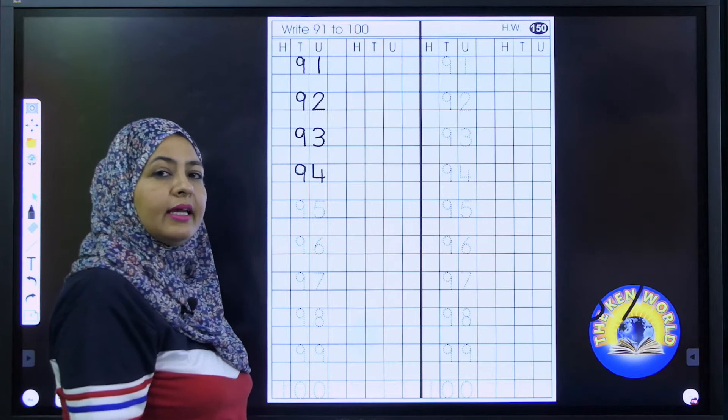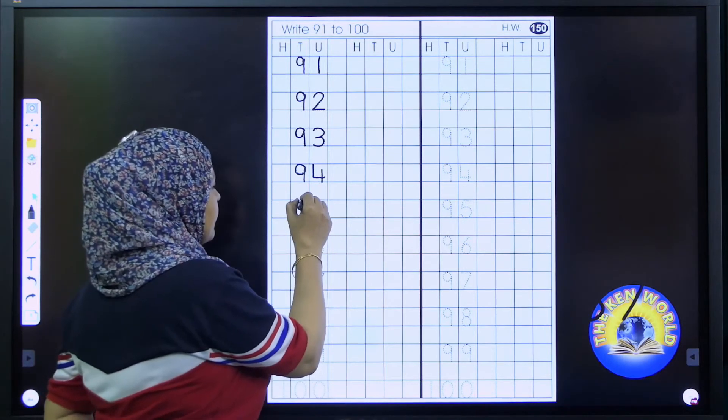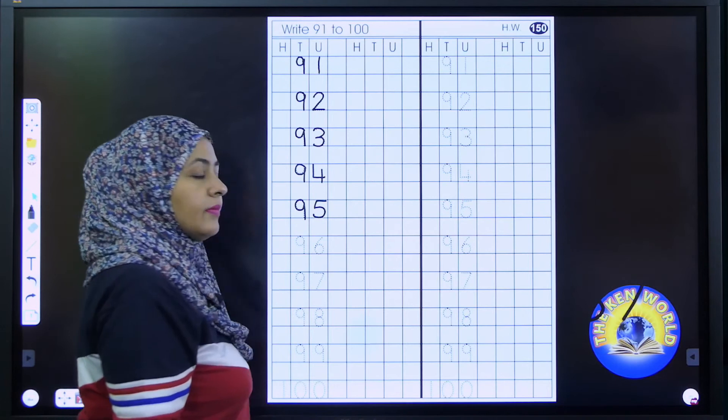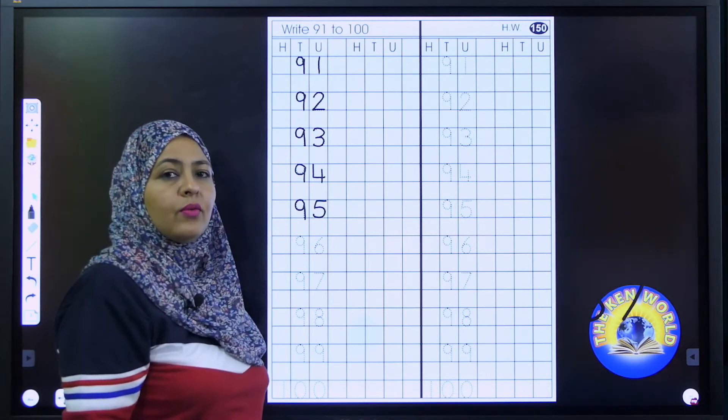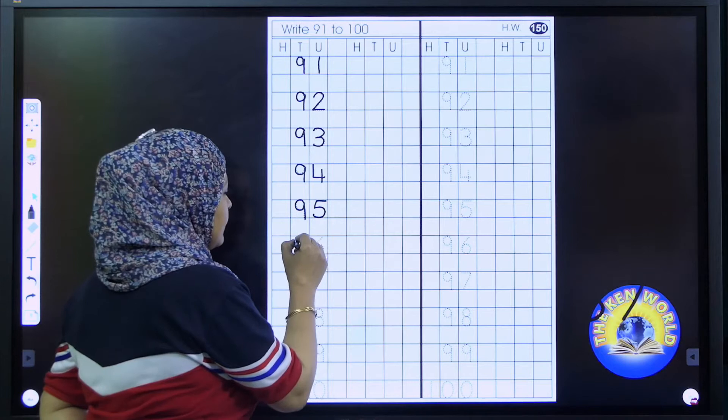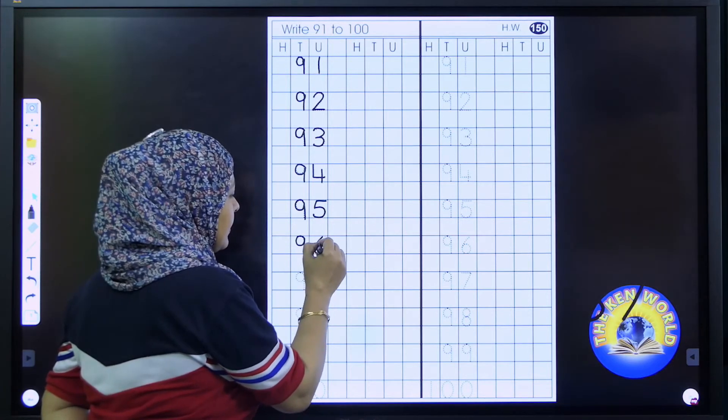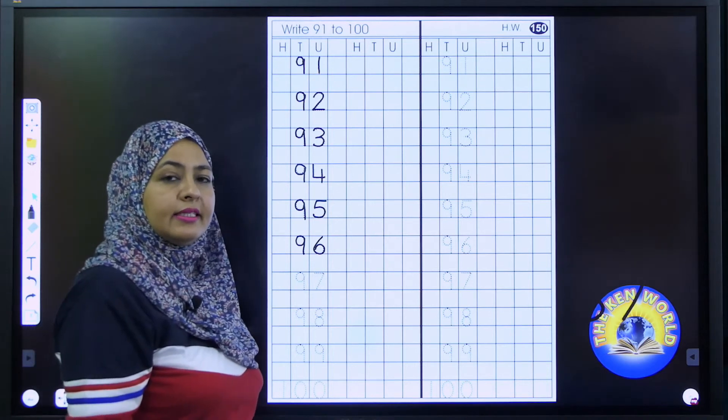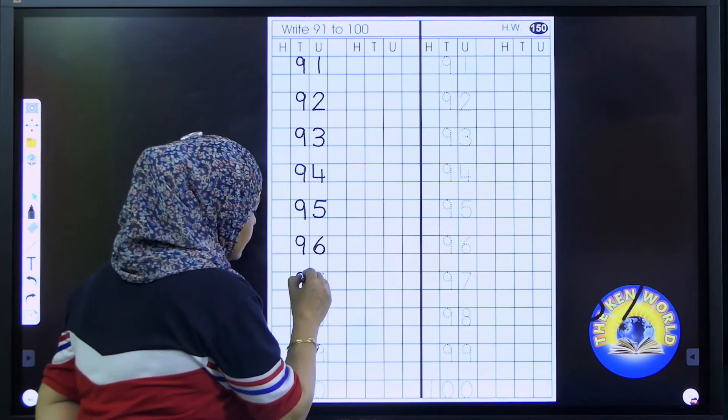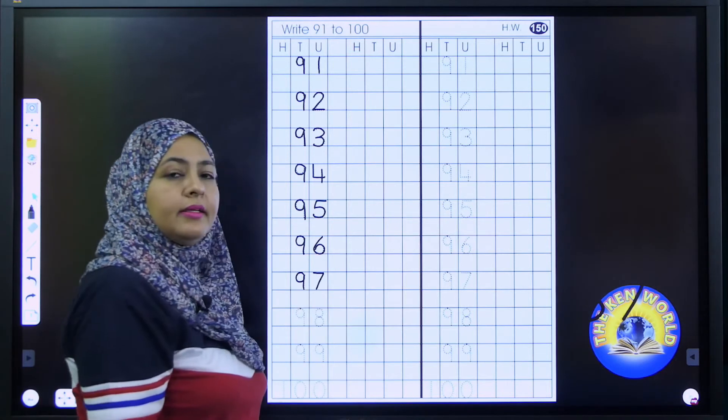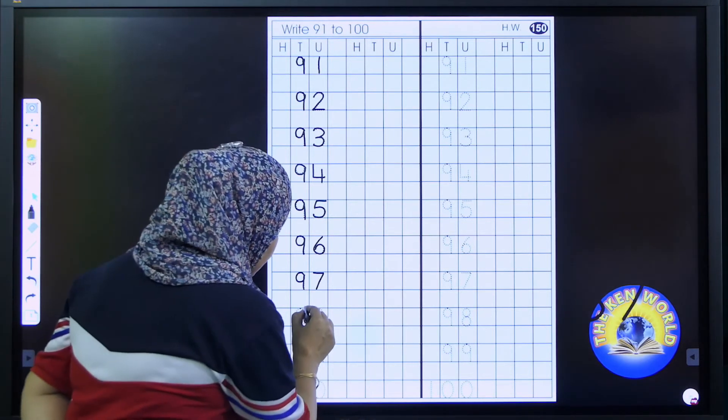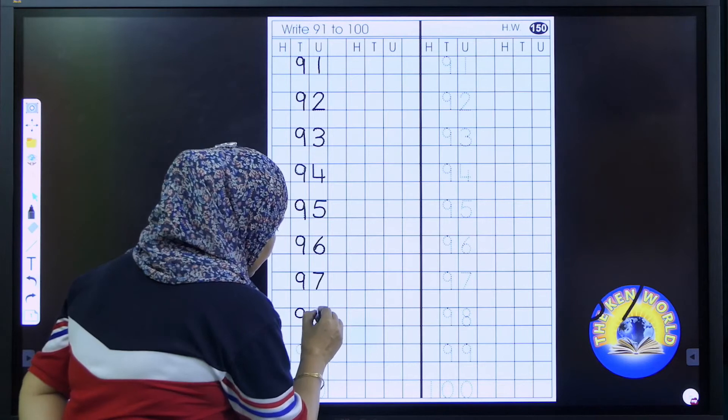Write the next number. That is 95. 9, 5, 95. Are you tracing the numbers? Very good. The next number is 96. 96, 96. After 96, it's 97. 97, 97. The next number is 98. 98, 98.